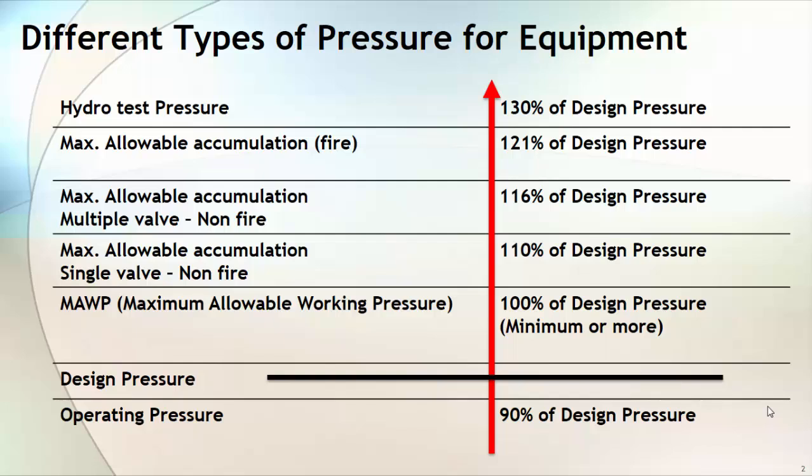Now it is very common that an 18 mm thickness plate can withstand more pressure than a 16.5 mm plate. So he will back-calculate, using this 18 mm thickness plate, what is the maximum pressure that this designed equipment can withstand. This pressure will become your maximum allowable working pressure. So now we have covered three terms: operating pressure, design pressure, and maximum allowable working pressure.